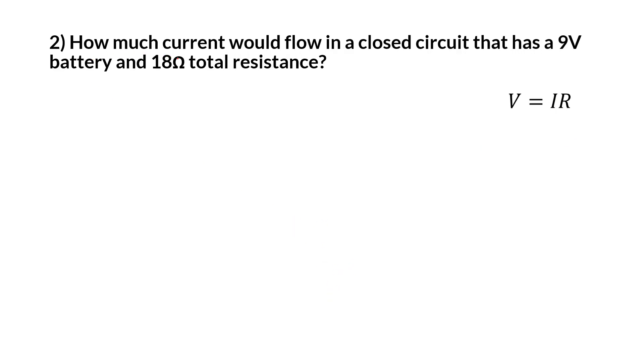Second example. Once again, keep pausing it and doing the work and then coming back and checking it. How much current would flow if you had a 9-volt battery with an 18 ohm resistance? You have your equation right here that rearranges to that one. When I'm trying to solve for current, I'm going to divide out R, ends up being I equals V over R. Throwing in the numbers, you're going to get 0.5 amps of current.